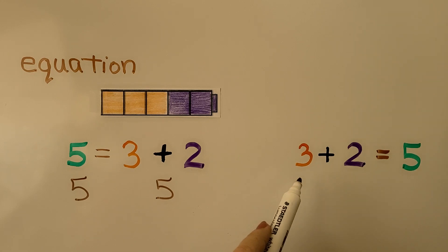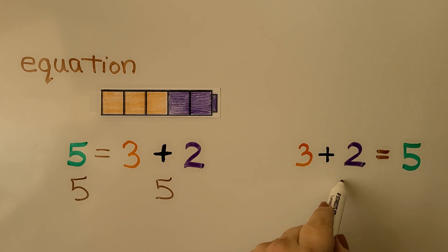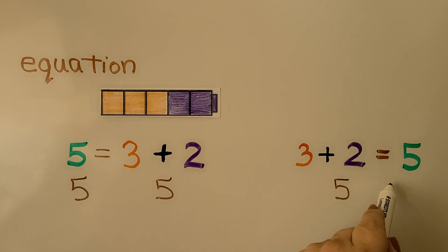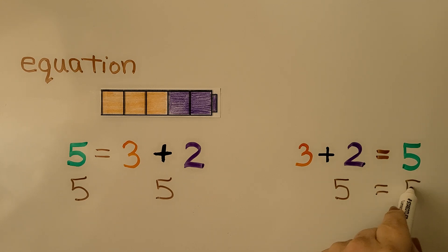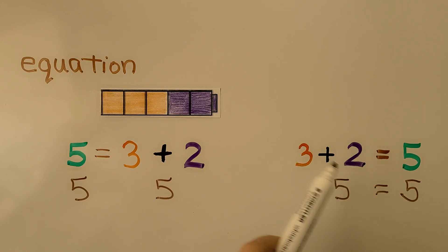On this one, the is-equal-to 5 is over here. We have 3 plus 2, which is 5 on this side of the equal sign, and we have 5 on this side. This is showing 5 as a number pair, and this is showing 5 as the number 5.